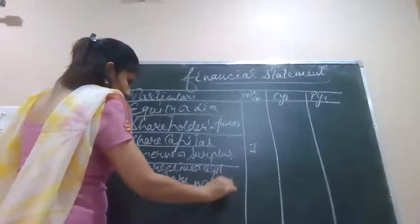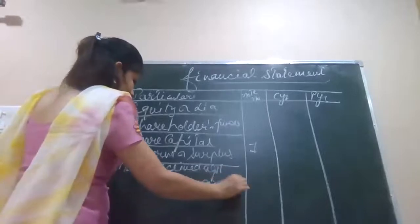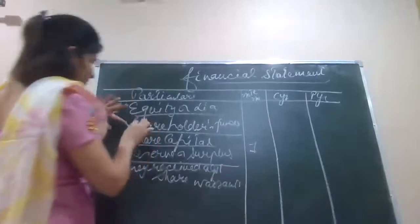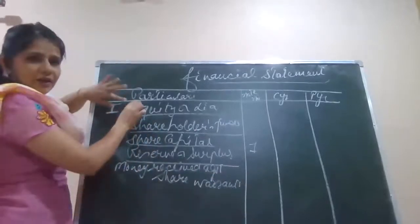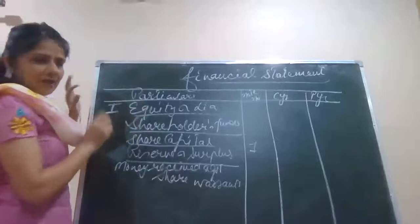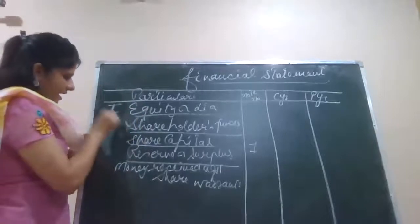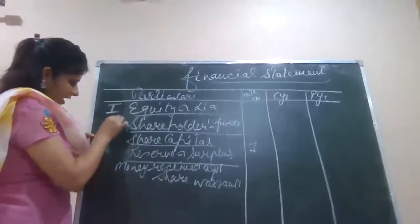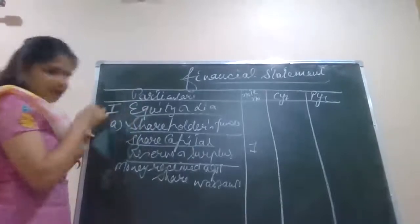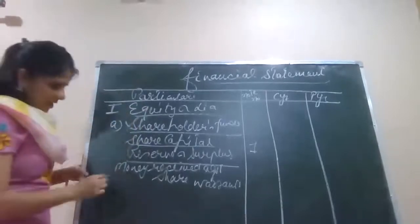So till now I just discussed the first main head under your equity and liability part. And I can call it A, right? That is the main head. Then the second main head we have...